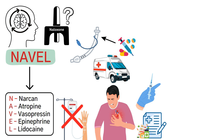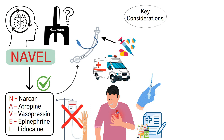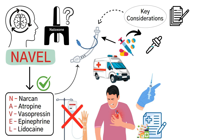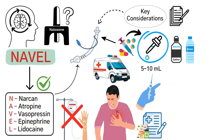Each of these drugs is safe to instill directly down the endotracheal tube. For key considerations with ET tube administration, medications should be diluted in 5–10 milliliters of sterile saline or water before instillation.